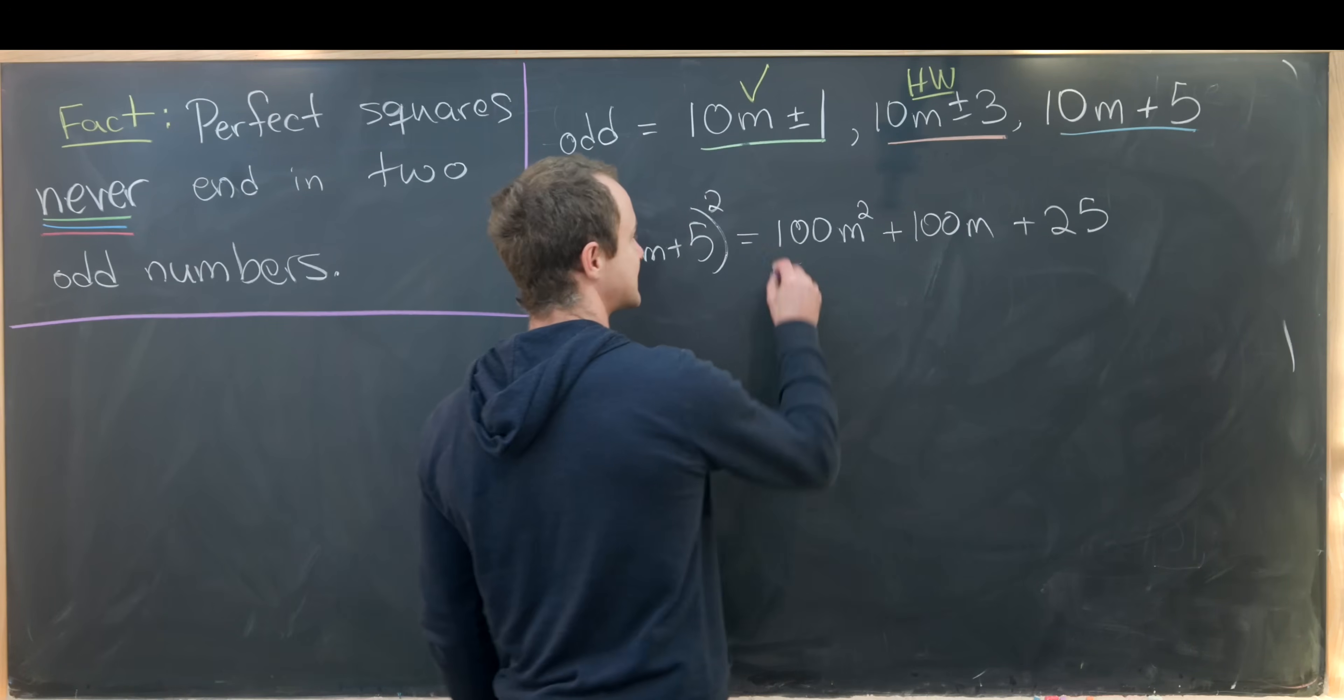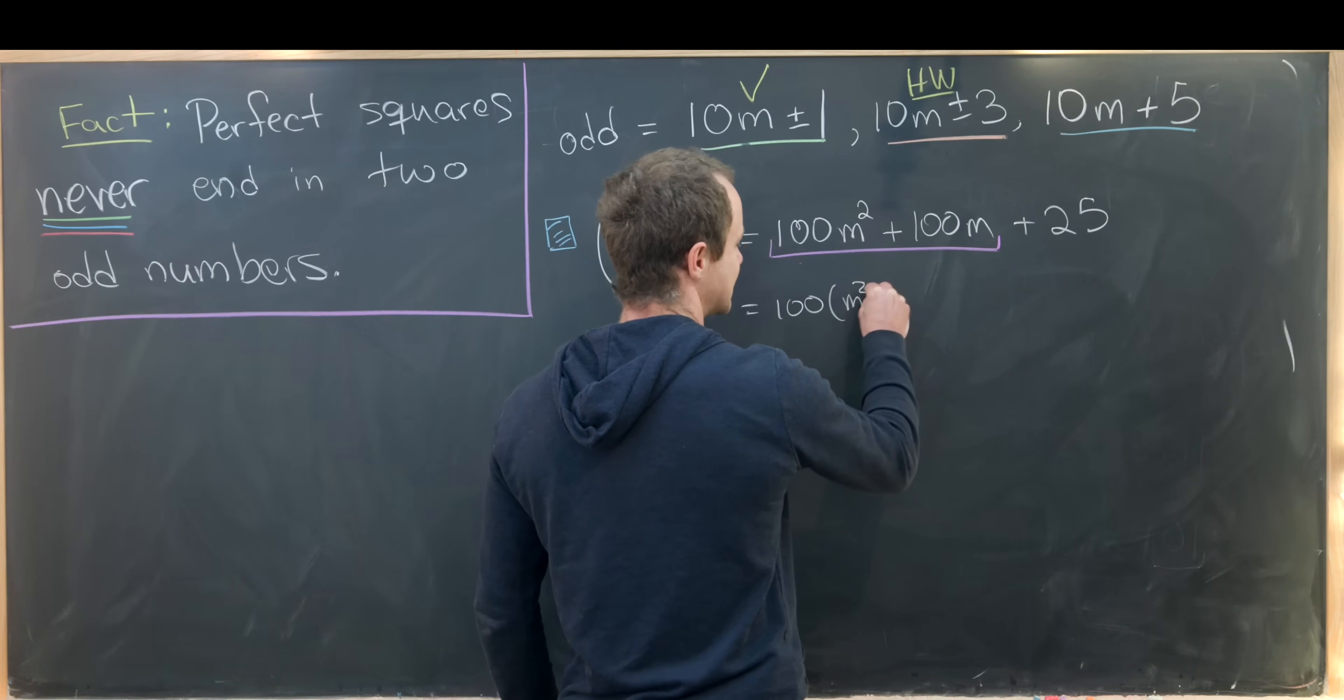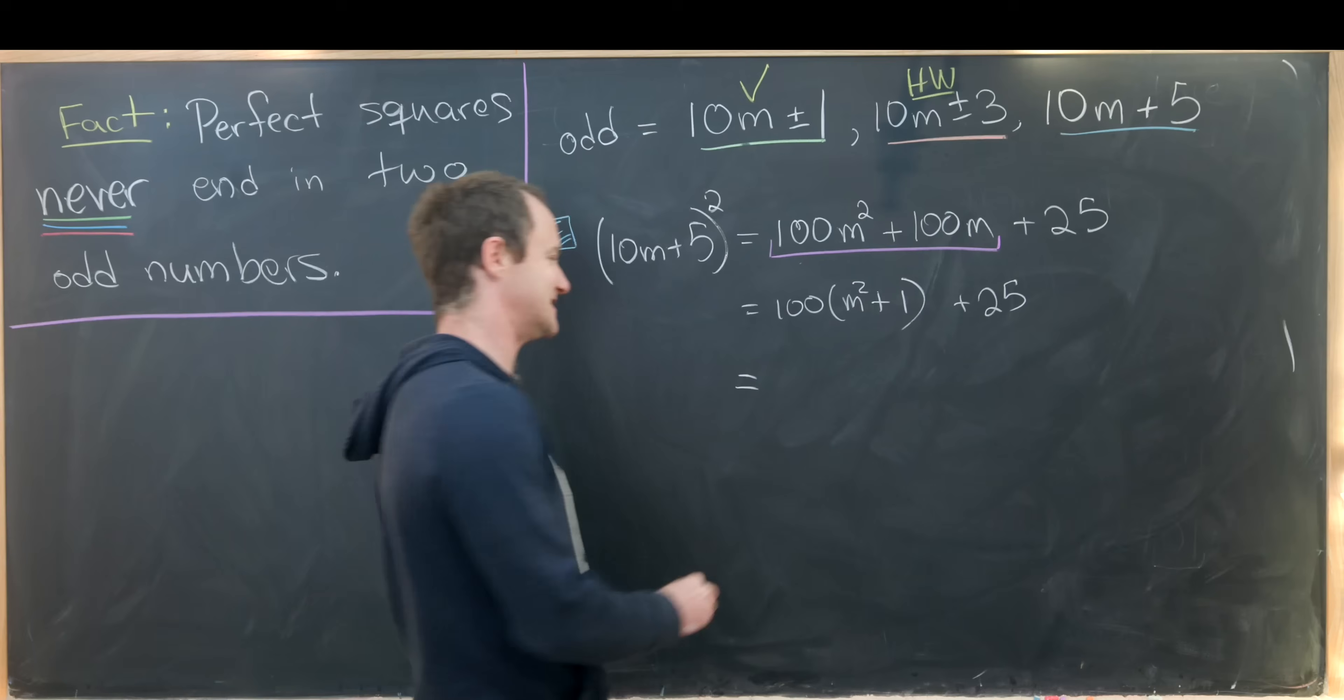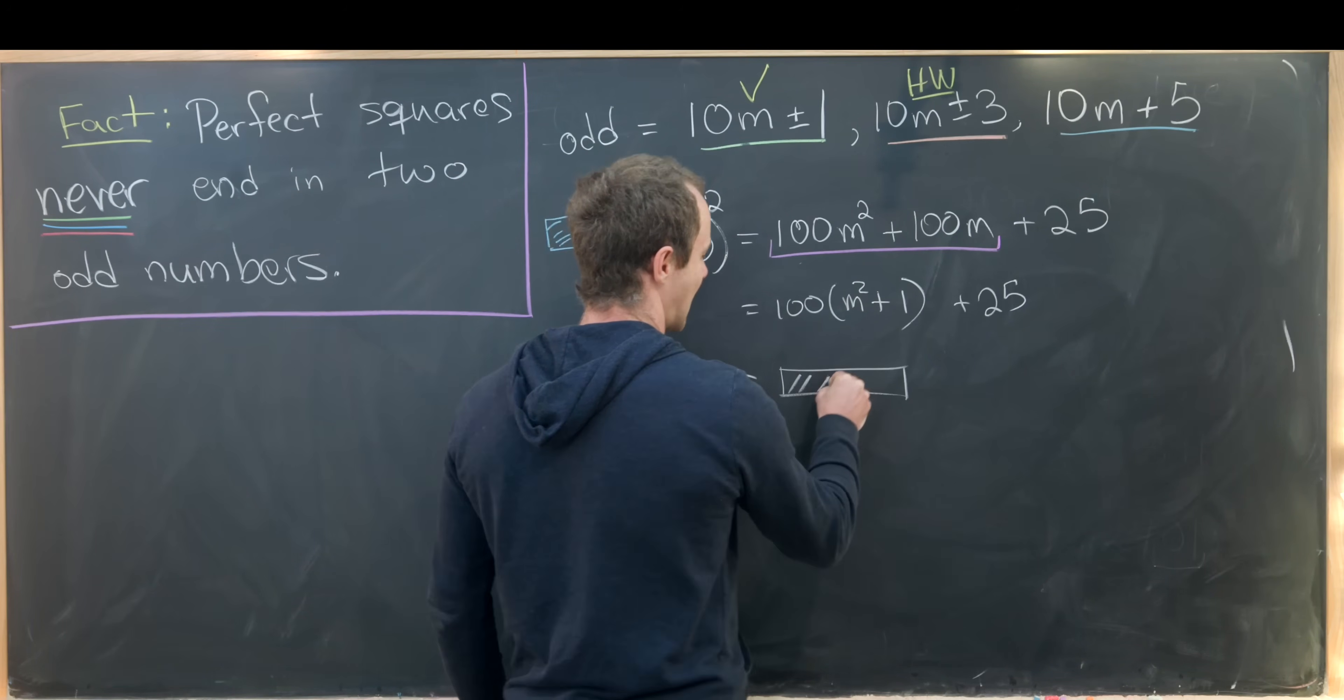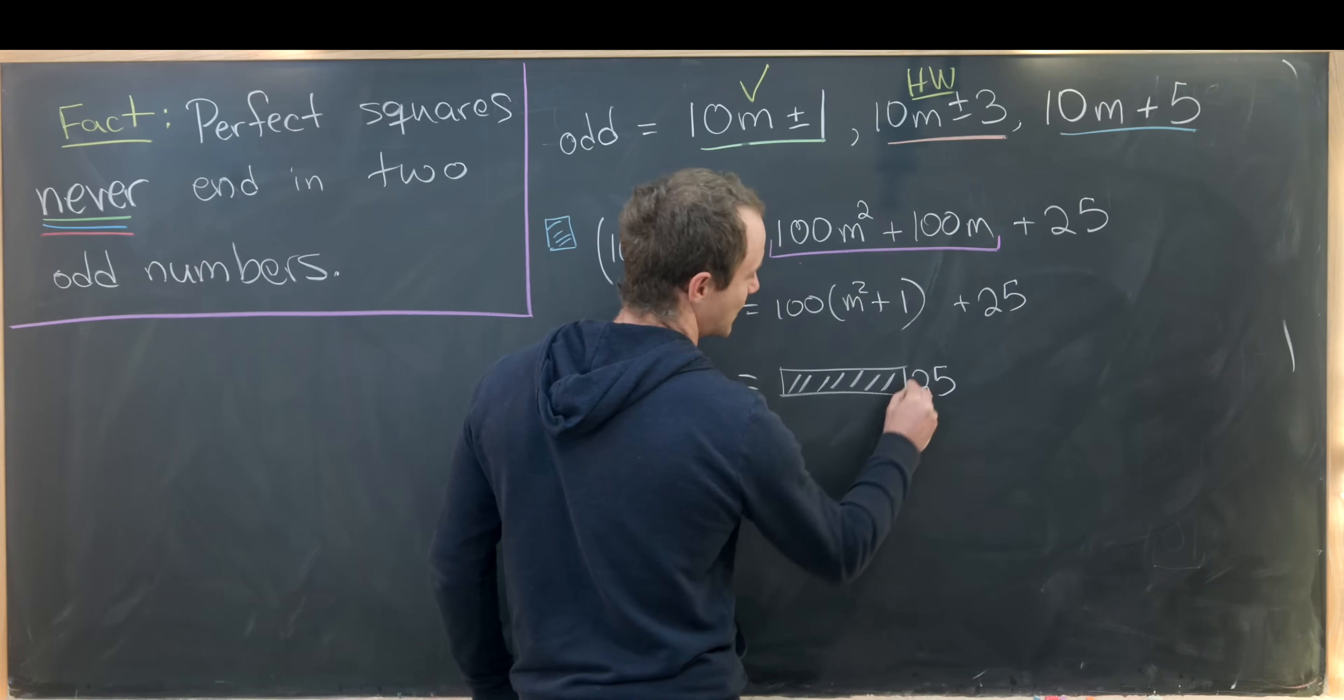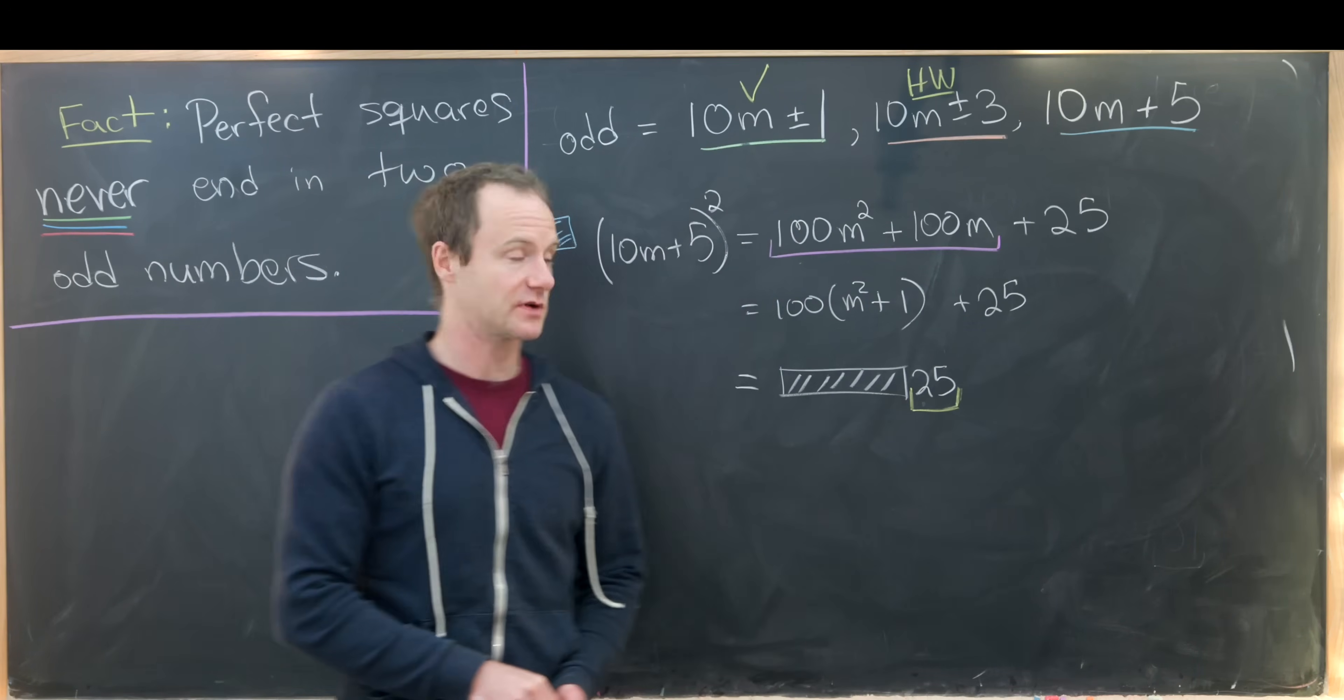But that's going to be 100m and then plus 25. But now notice that this guy right here is a multiple of 100. That's pretty easy to see. It's 100 times m squared plus 1 plus 25. So that means if we were to write this number in terms of its digits, it would have a bunch of leading digits. We don't know exactly what they are. And then it would end in a 25. But since it ends in a 25, we see that it ends in an even number and then an odd number. Thus it does not end in two odd numbers.